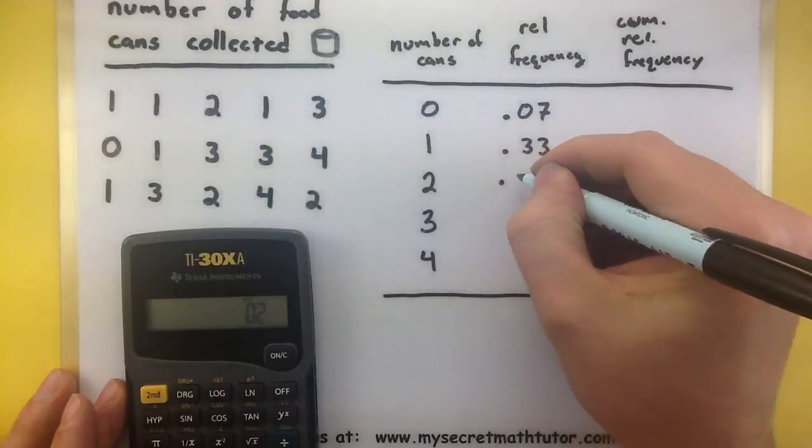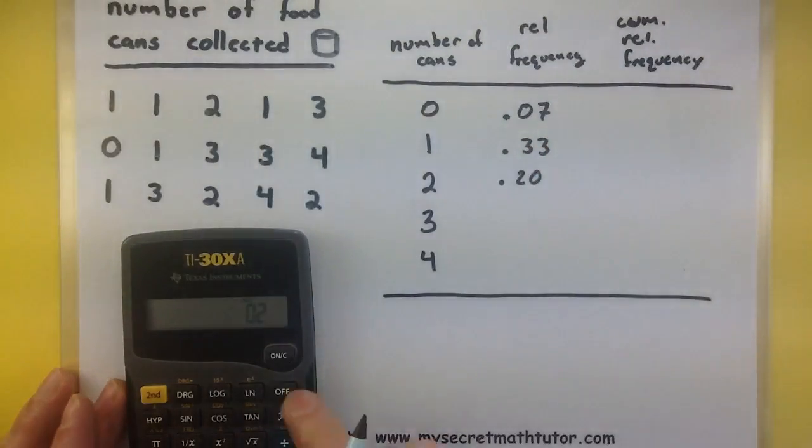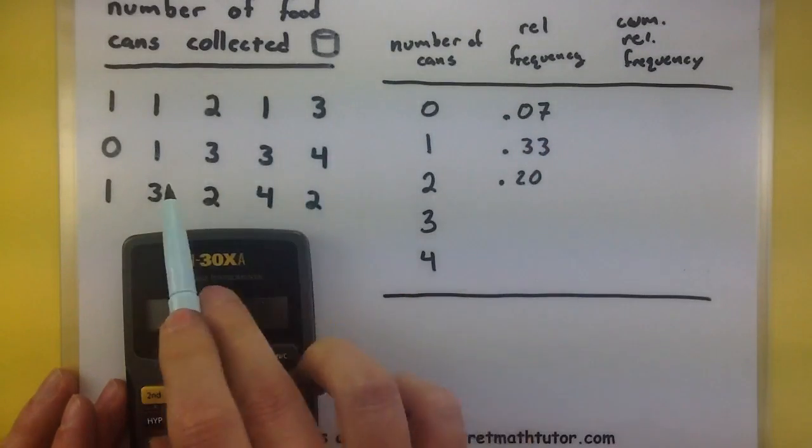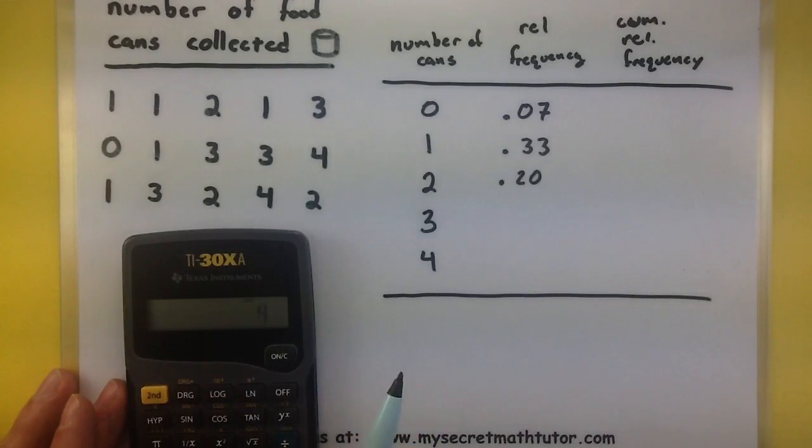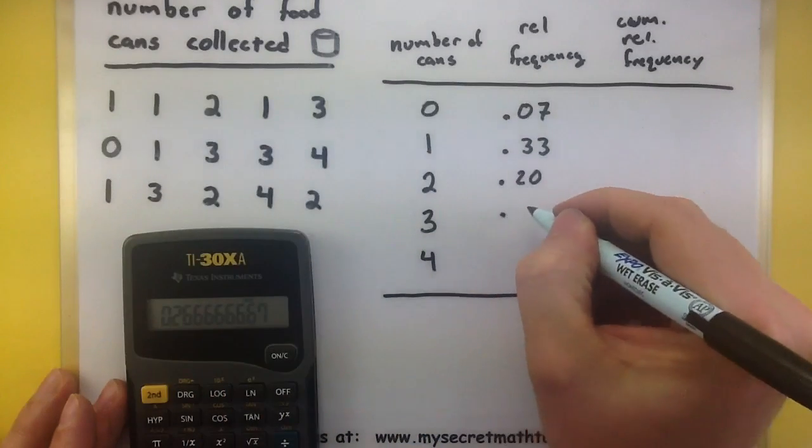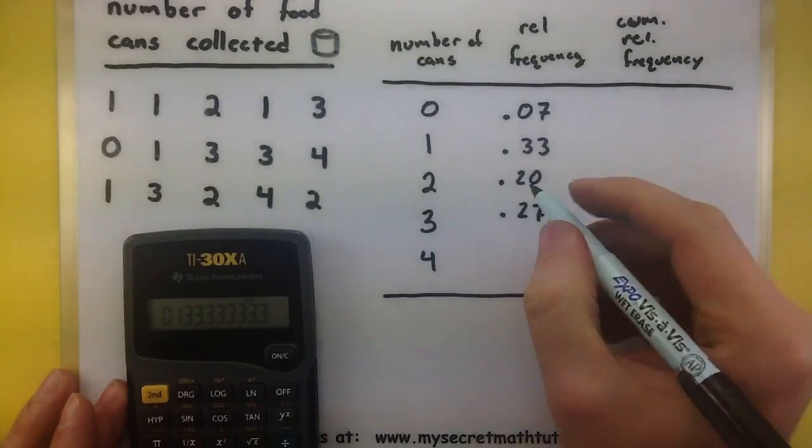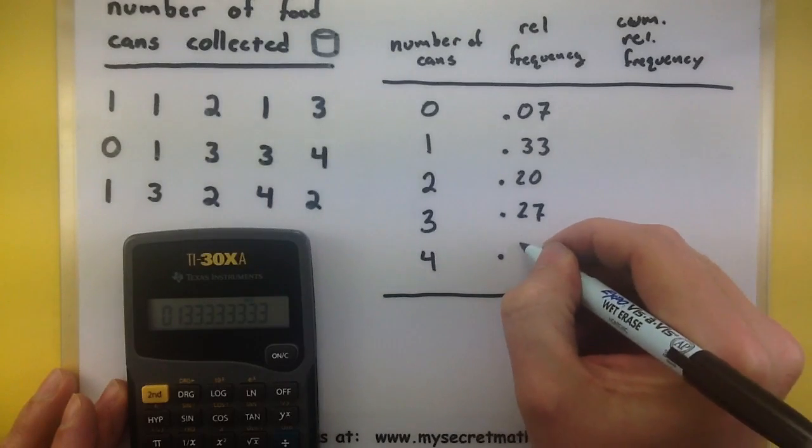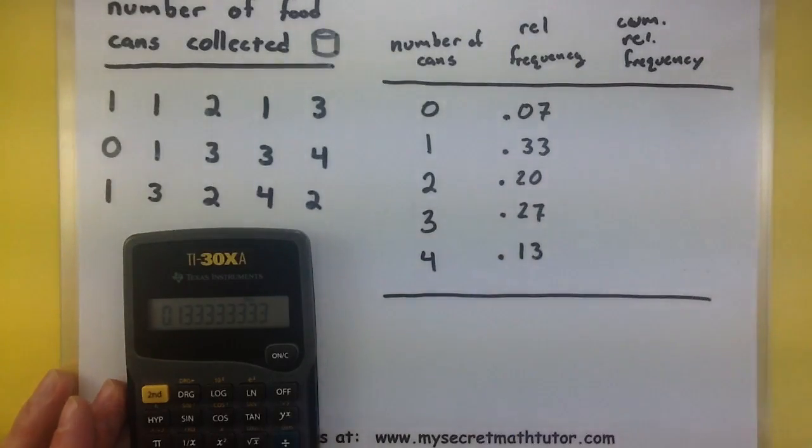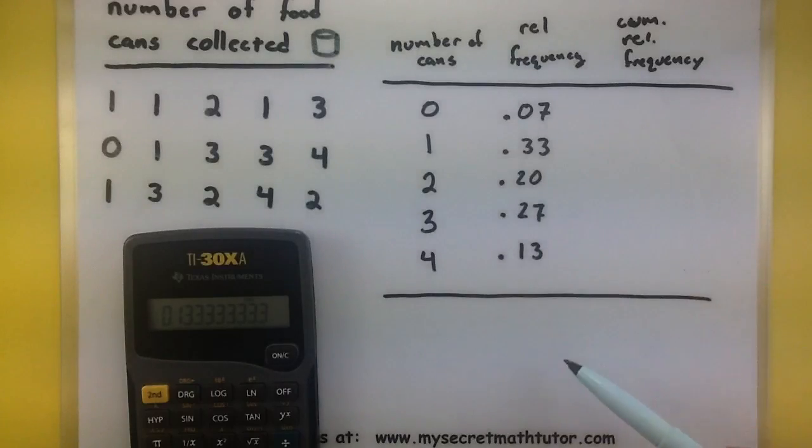1, 2, 3, 4 threes. And it looks like just a couple of fours, so 2 divided by 15. If you need help with this, check out my other video on building a relative frequency.